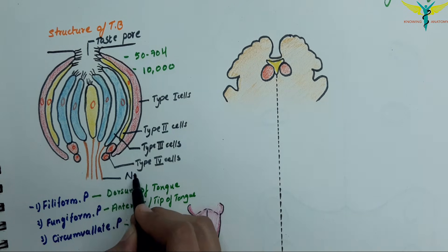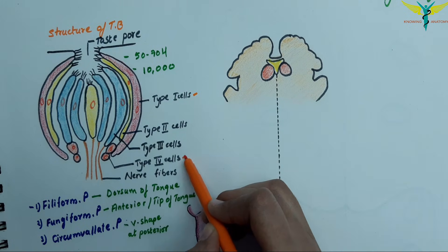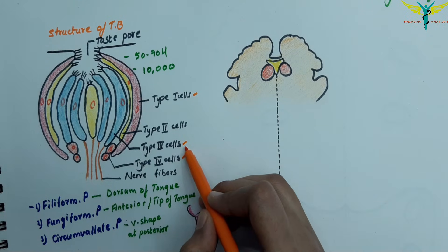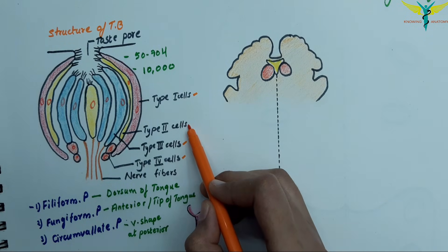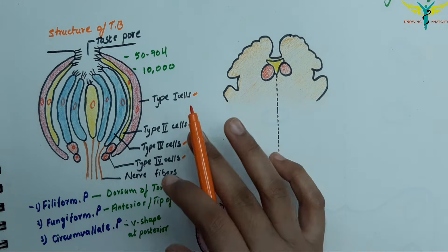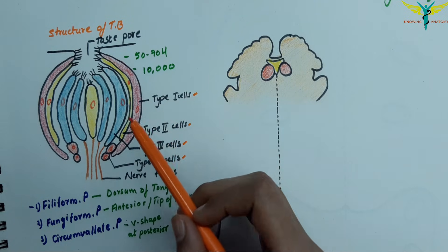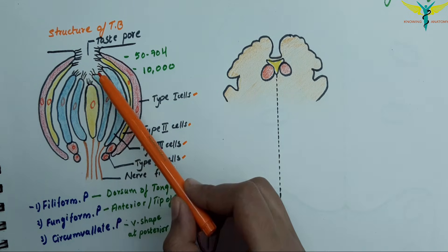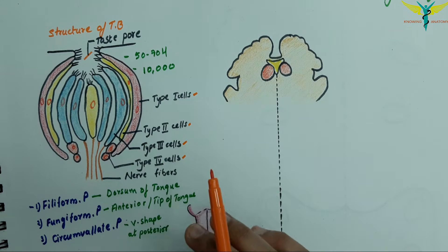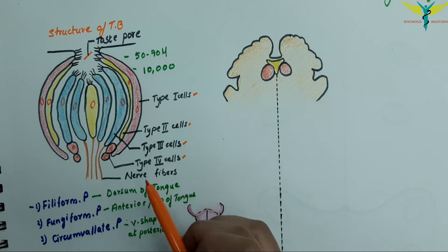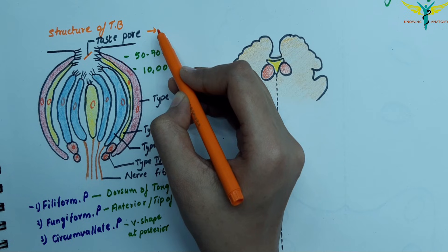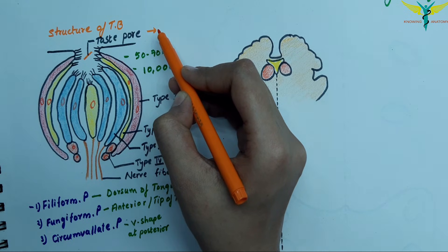Type 3 cells are also called basal cells, along with nerve fibers. Type 1 and Type 4 cells are supporting cells, Type 3 cells are the taste receptor cells, and the function of Type 2 cells is unknown. Types 1, 2, and 3 have microvilli which project into the taste pore — the opening in the epithelium covering the tongue. All cells of the taste bud are surrounded by epithelial cells with tight junctions between them, and they undergo a constant cycle of growth, apoptosis, and regeneration.